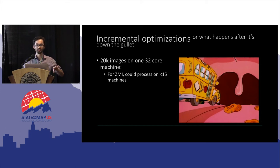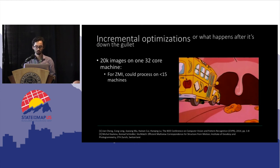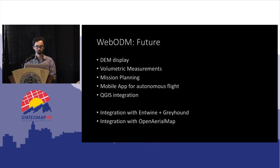You could also segment the processing out across different machines and then put it all together — a sort of federated processing pipeline — which is something we're hoping to have as well.